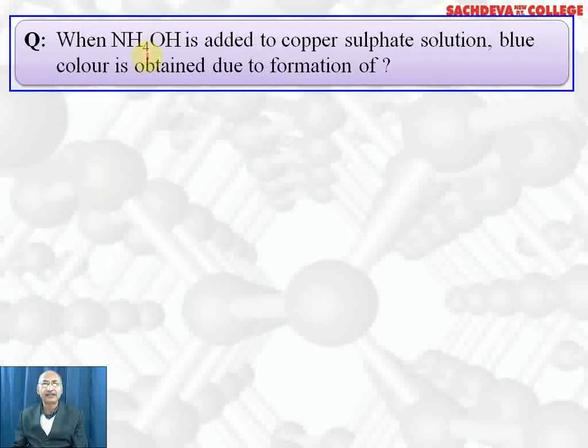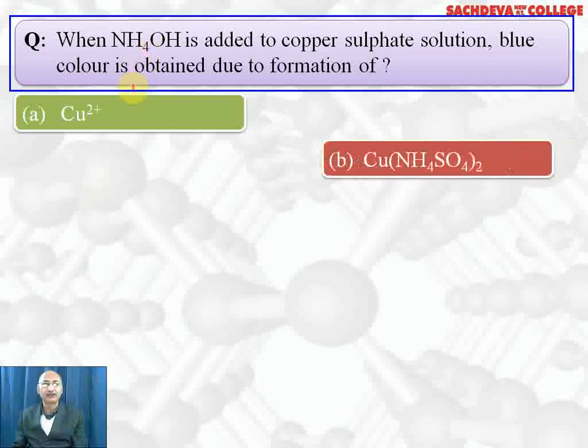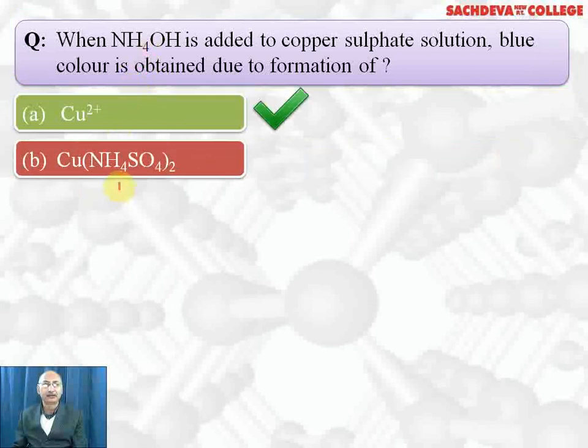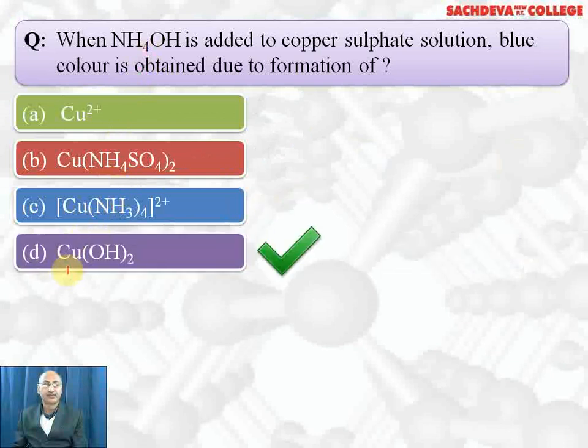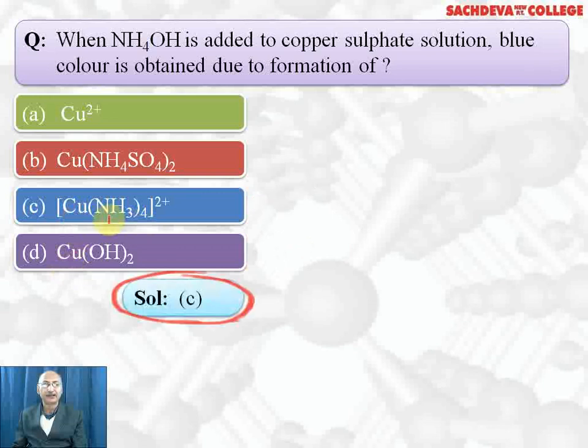When ammonium hydroxide is added to copper sulfate solution, blue color is obtained due to the formation of a cupramine complex. C part is the correct answer. If we add little of ammonium hydroxide we get blue precipitate, but when excess of ammonium hydroxide is added, blue coloration is due to the soluble complex formation which is tetraamine copper(II) complex.